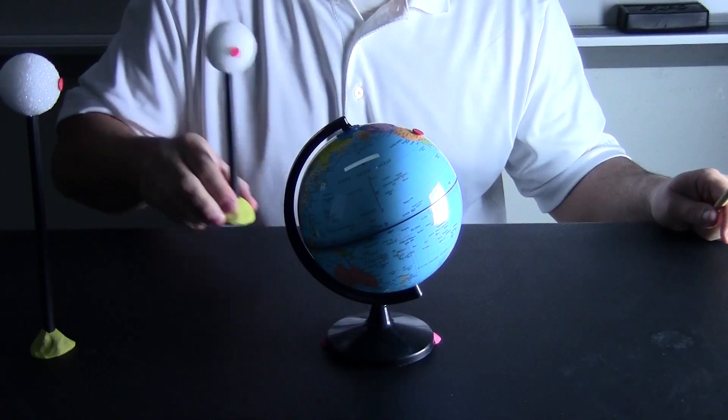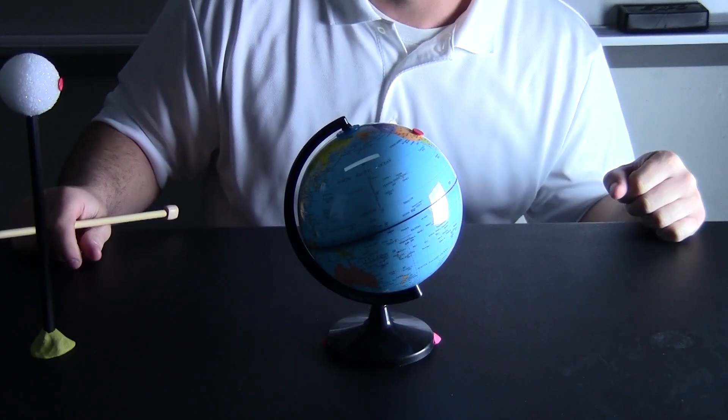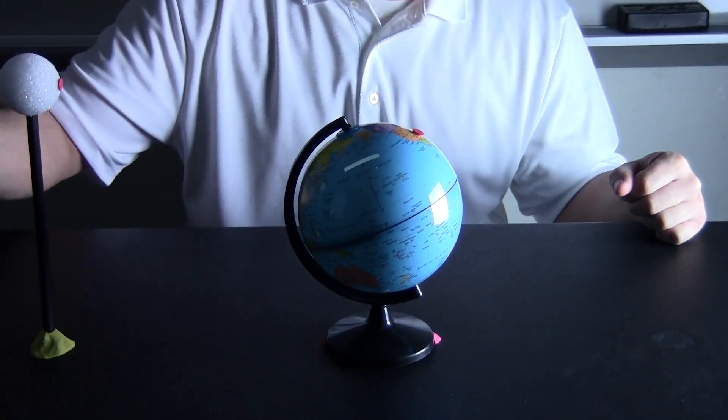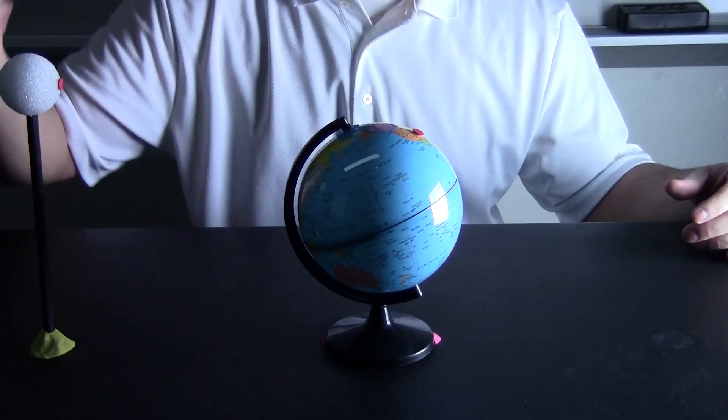The moon continues its movement around the earth and we are left with this setup. And you can see now, we can see. And now the side facing the earth is all lit up like a full moon.